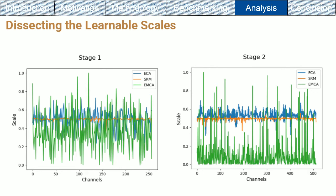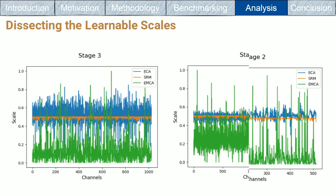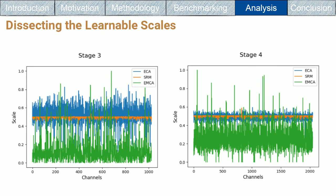ECA and SRM learned scales have a mean around 0.5, which indicates almost the majority of the channels have the same importance. In contrast, the EMCA scales mean is around much lower value than 0.5, which is 0.1 and 0.3 for stage 2, 3 and stage 1, 4 respectively.